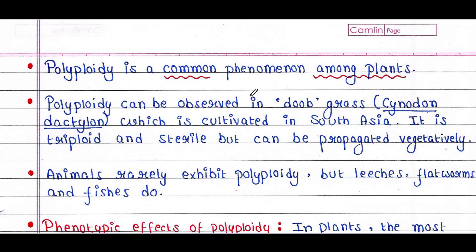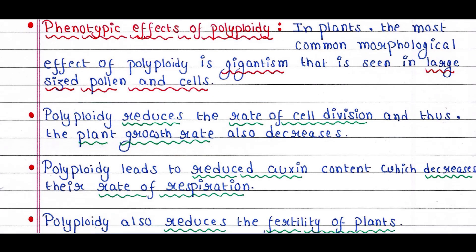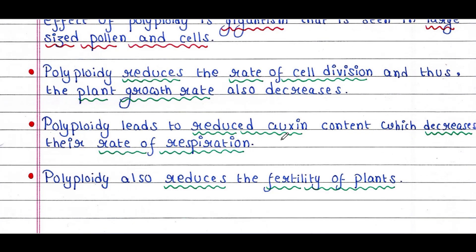Polyploidy is a common phenomenon among plants. It can be observed in Bermuda grass (Cynodon dactylon), cultivated in South Asia, which is triploid and sterile but can be propagated vegetatively. Animals rarely exhibit polyploidy, but leeches, flatworms, and fishes do. In plants, the most common morphological effect is giantism, seen in large-sized pollen and cells. Polyploidy also reduces the rate of cell division, plant growth rate, auxin content, rate of respiration, and plant fertility.